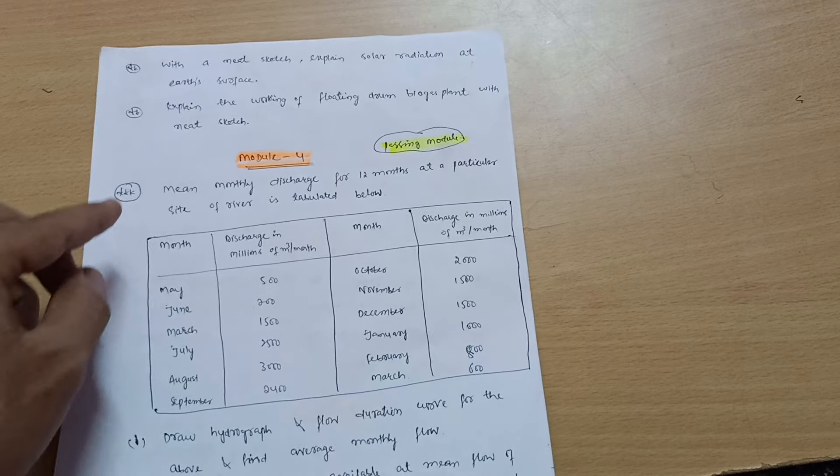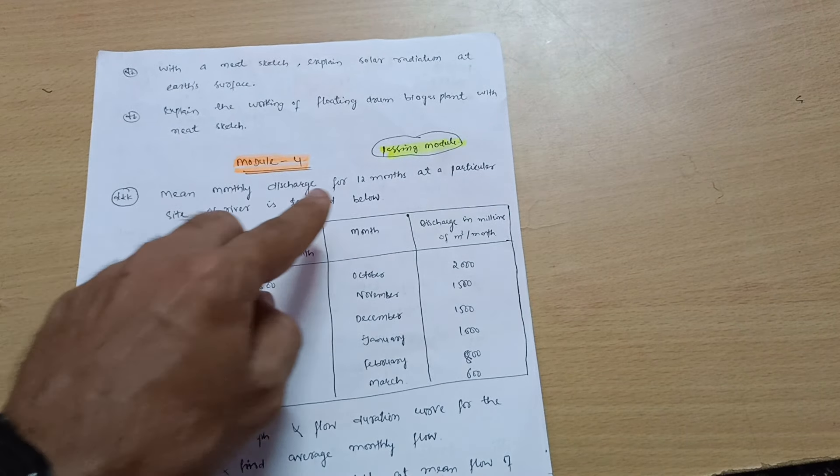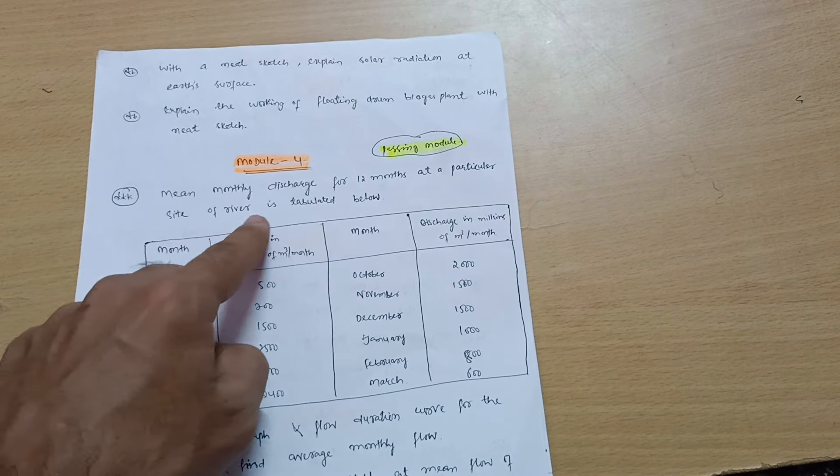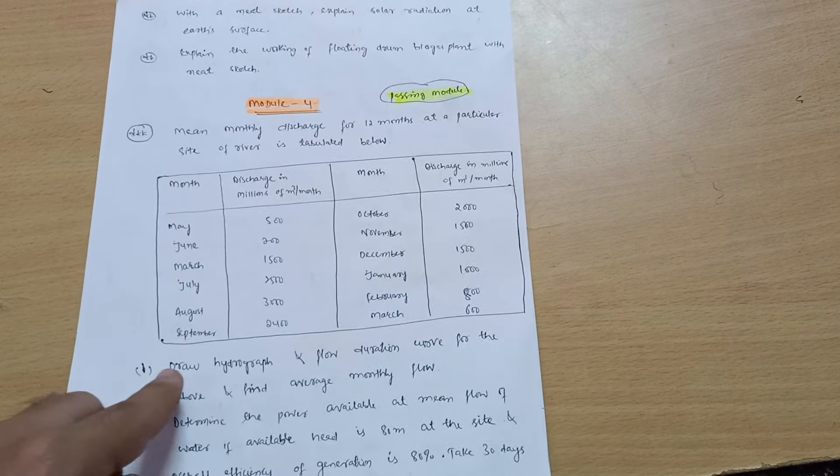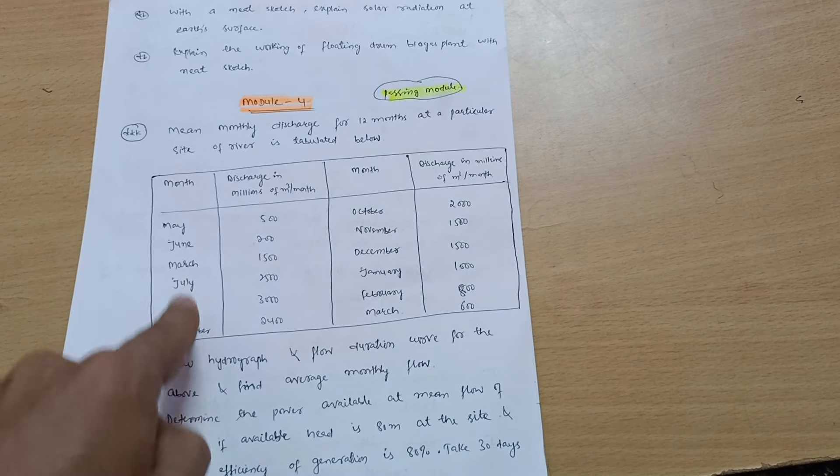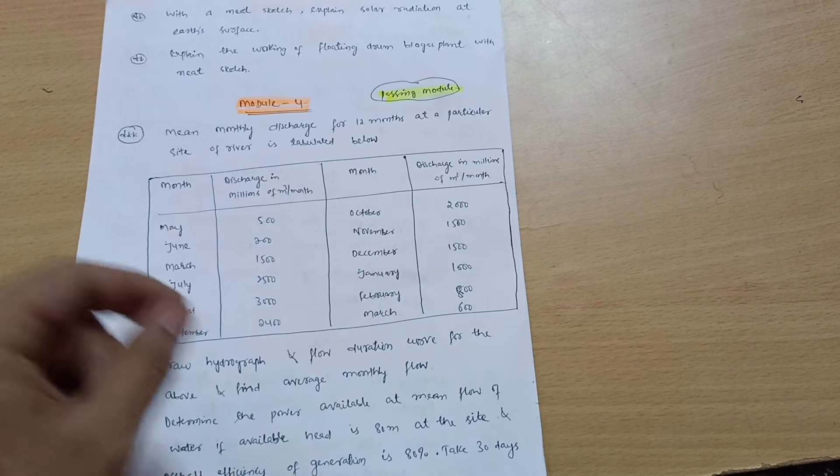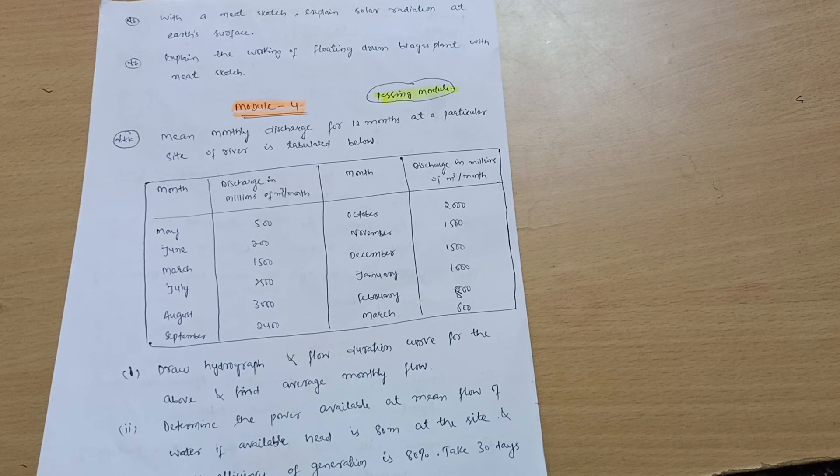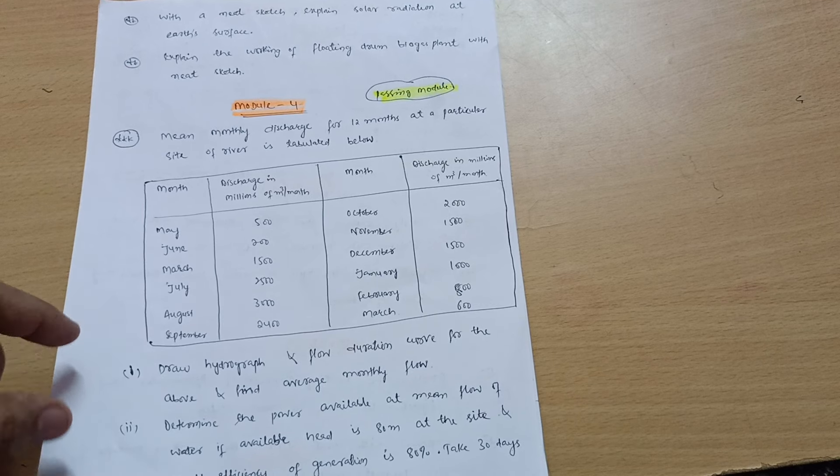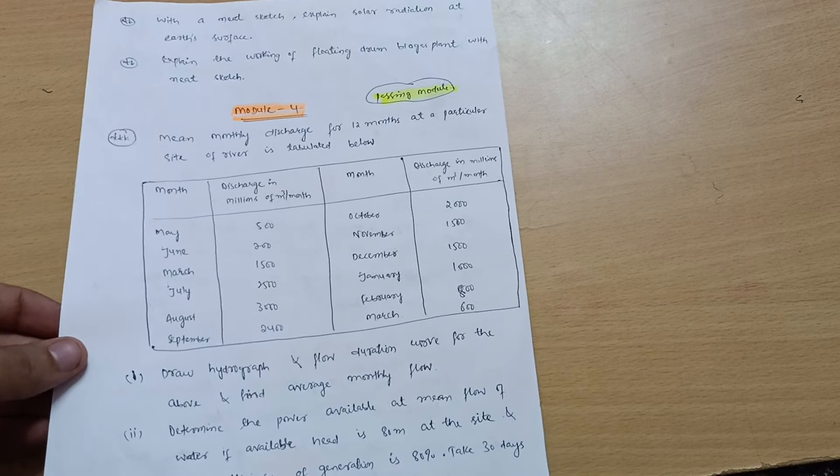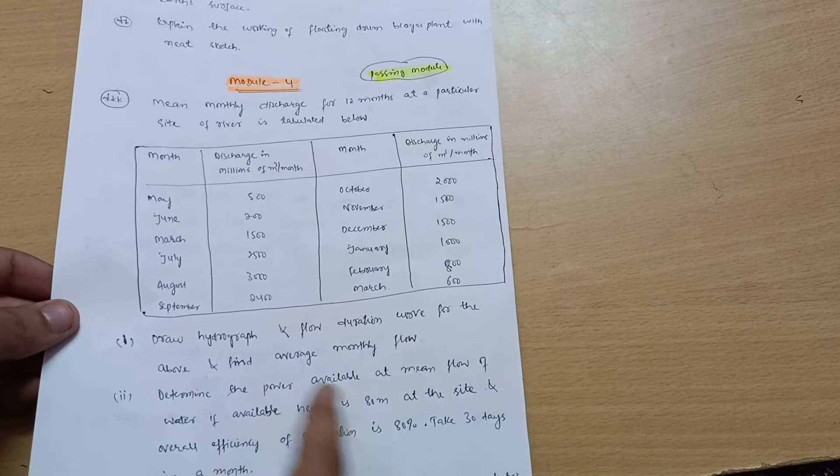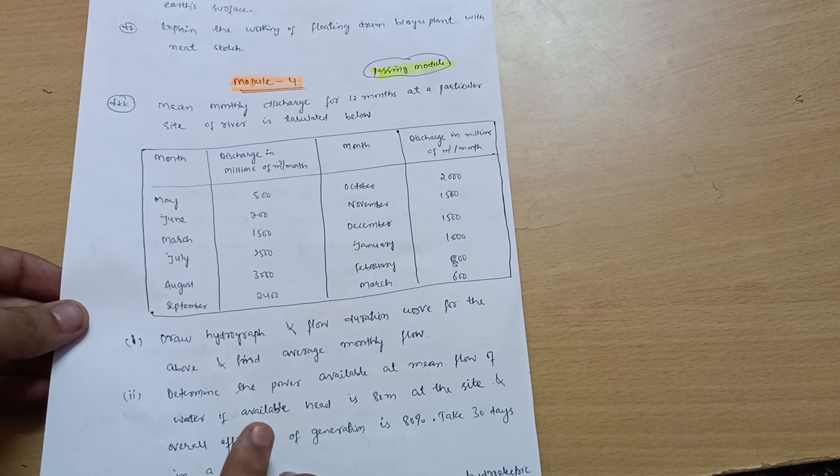Next, Module 4, which is again a passing module. You can easily score in this particular module 20 marks. Mean monthly discharge for 12 months at a particular site of river is tabulated below. This much will be the data. You have to draw the hydrograph and flow duration curve for the above and find average monthly flow. This is the easiest problem. If you want me to make a separate video for this hydrograph, I can easily make. You can comment down so that I can get the severity from the students.